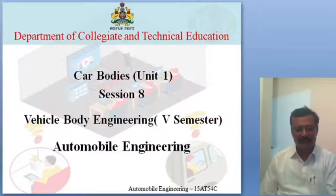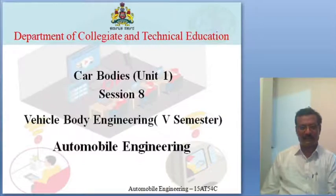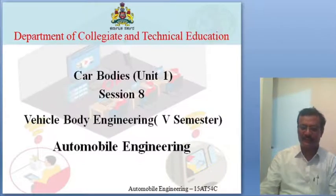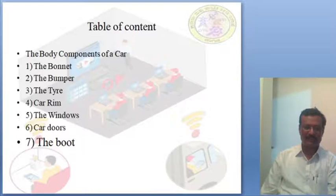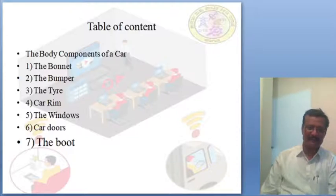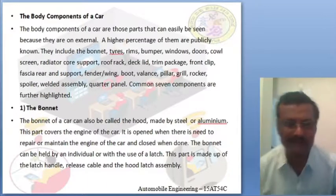Last class we discussed car body construction. Today we will discuss the main components of the vehicle car body. A few components used in car body construction include: the bonnet, bumper, tire, car rim, windows, car doors, and boot.